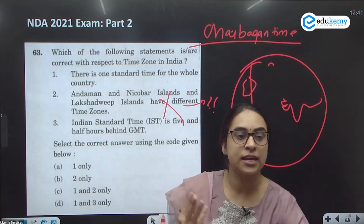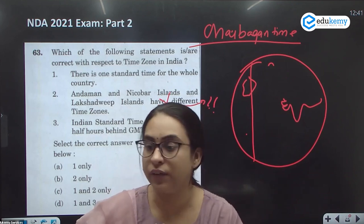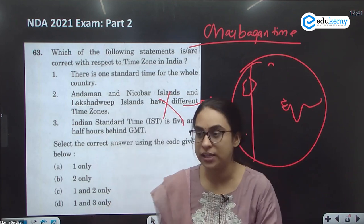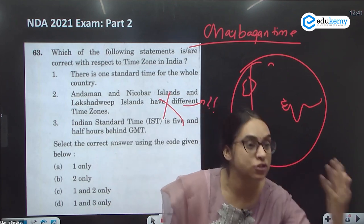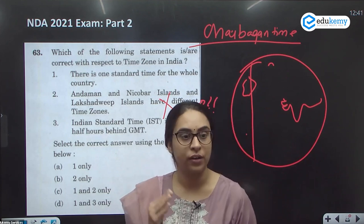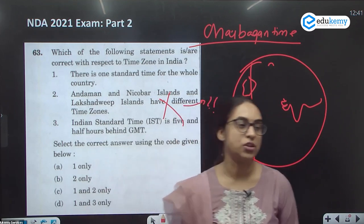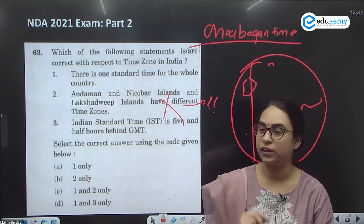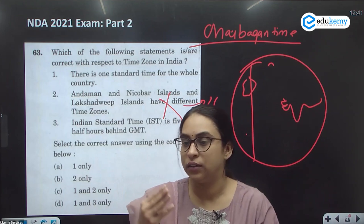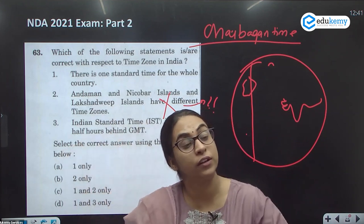The northeastern states are asking for what is called 'Chai Bagan time' — a time zone two hours ahead of IST. There are debates about this. One section says giving a separate time zone will save electricity and increase employee productivity. But others argue it is against national integration, increases rail accident risks, and could signal that the northeastern section is different from India, potentially fueling secessionist movements.